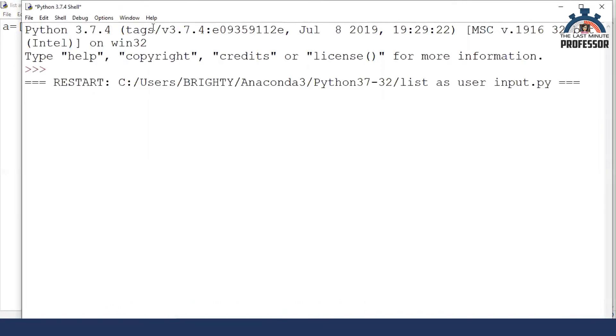It is asking me the input. I'm giving it as one comma two comma three comma four. The name of the list is A. So I am printing and seeing it now. It is one, two, three, four.